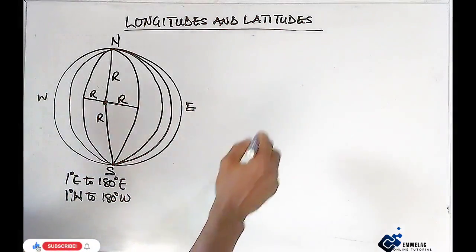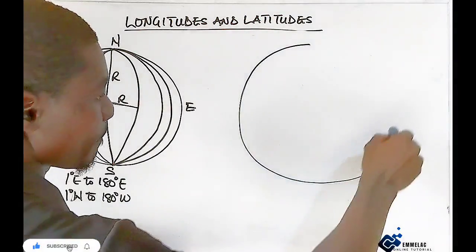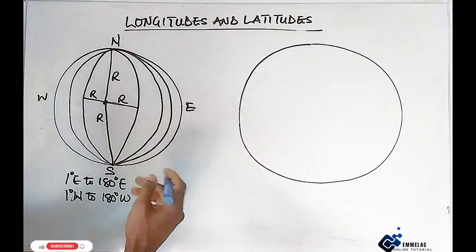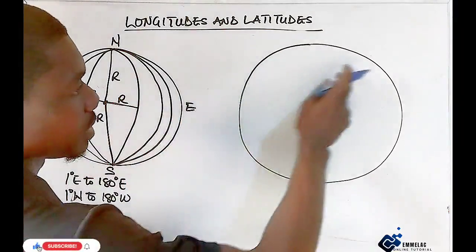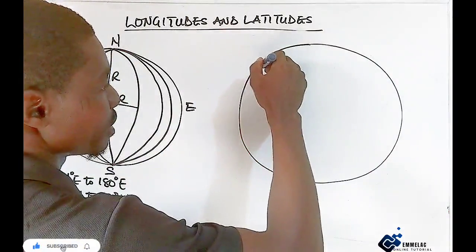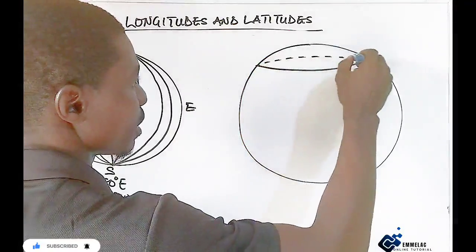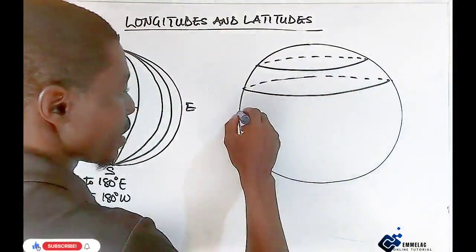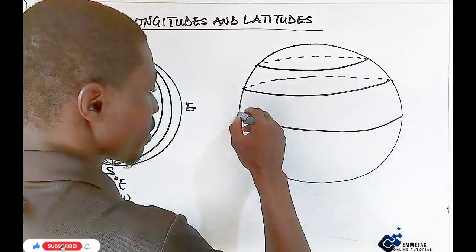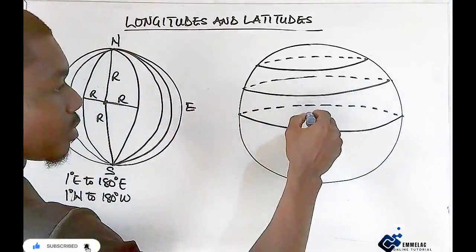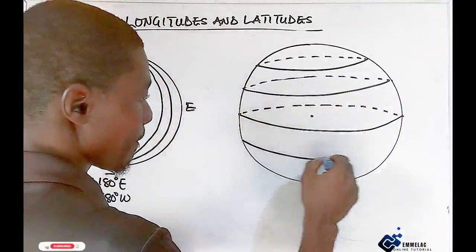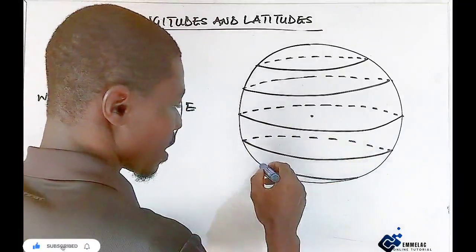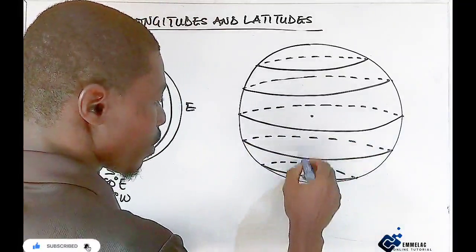Now let us move to latitude. From another circle being drawn — for latitude, these are imaginary lines also that are drawn from the West down to the East. One line falls at the equator, or probably the center of the Earth itself, and they go on and on. Take note they also have their own centers.